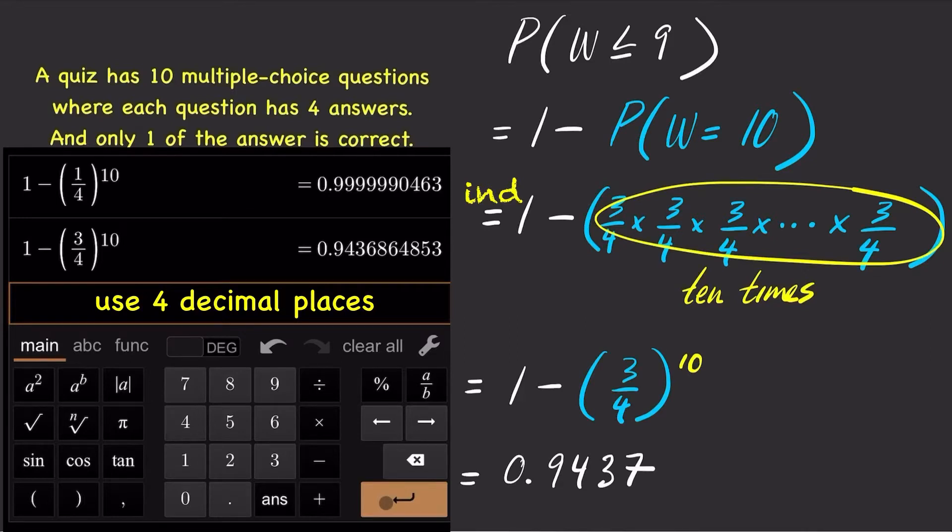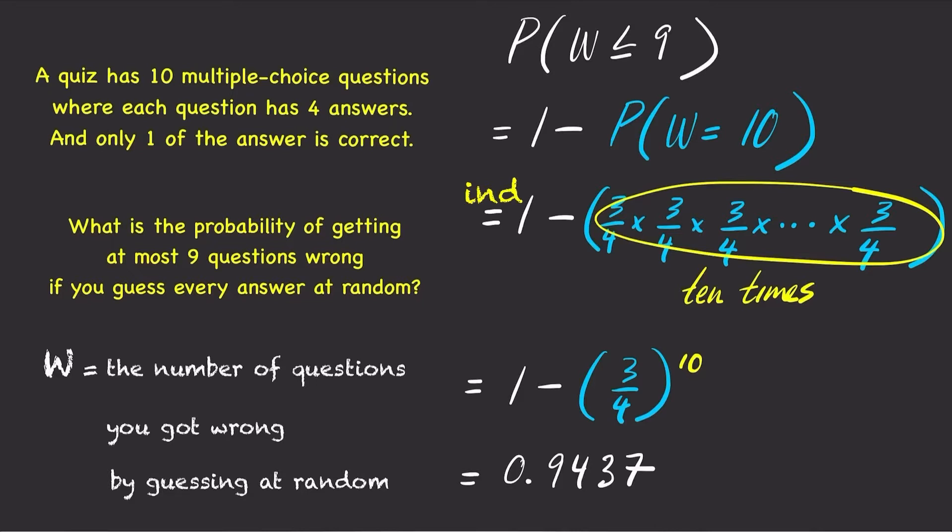In other words, there is a 94.37% chance of getting at most 9 questions wrong by guessing every answer at random.